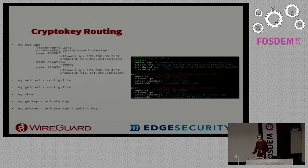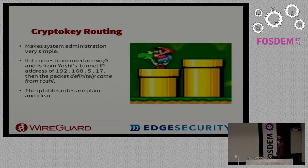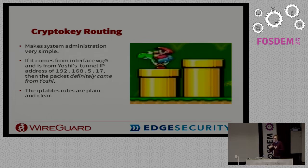All the issues of cryptography, session management, etc., are handled transparently under the surface. So to the system admin, the whole interface appears stateless — you just set it up, here are the peers, and it works. Because we have this relation between public keys and IP addresses, we know that if it comes from WG0 and from a particular IP address, it must be from the expected peer through the tunnel. With iptables, you match on the input device of WG0 and the source address, and all the things you already know layer nicely on top.